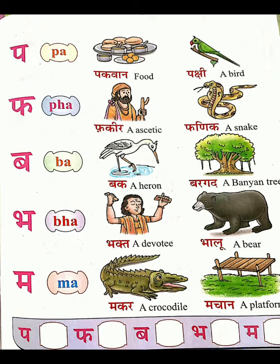Second letter: PHA, P-H-A. 'Phakhira' — a stick, A-S-C-E-P-T-E-R. Then 'phanik', P-H-A-N-I-K, a snake, S-N-A-K-E.